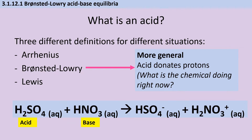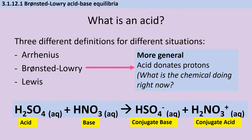When nitric acid accepts a proton from sulfuric acid and forms a positively charged ion, we call this a conjugate acid, and the ion that's left over is the conjugate base. We can put these together as conjugate acid-base pairs, which basically means they've both come from the same original species. So sulfuric acid and the hydrogen sulfate ion are one conjugate acid-base pair, and nitric acid and the nitroxonium ion are the other conjugate acid-base pair.